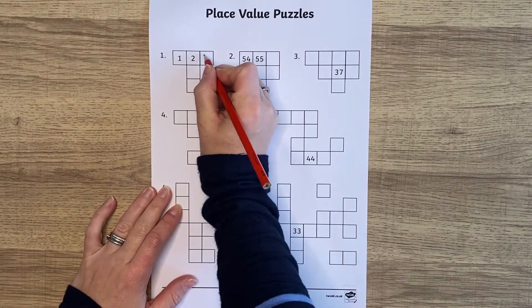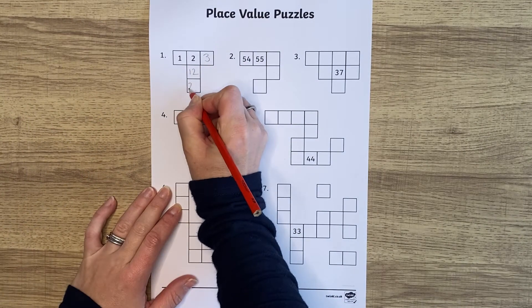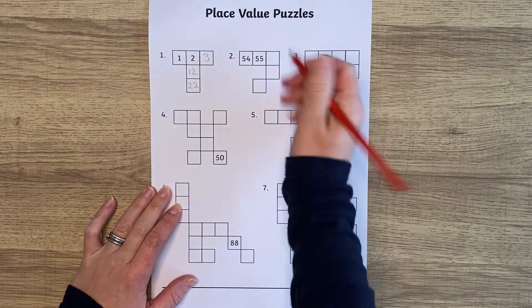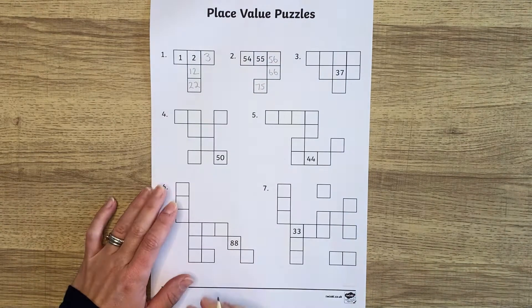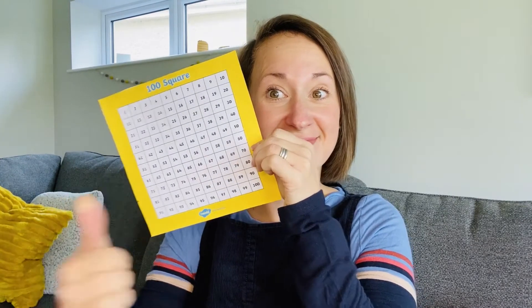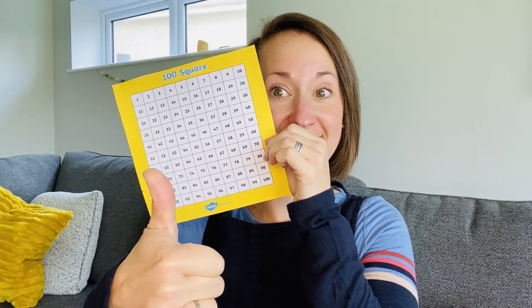This missing numbers hundred square puzzle is great for place value. The children have to work out what number would be in each box as if they were looking at a number square. If they find it a little tricky, why not use one of our many hundred squares to help them?